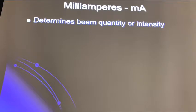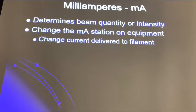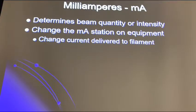Milliamperage (MA) determines beam quantity or intensity. Changing MA stations on equipment changes the current delivered to the filament. For example, when you go from the 100 mA station to the 500 mA station, you're changing how much current can flow — think of it like bigger, thicker wires that can move more current.